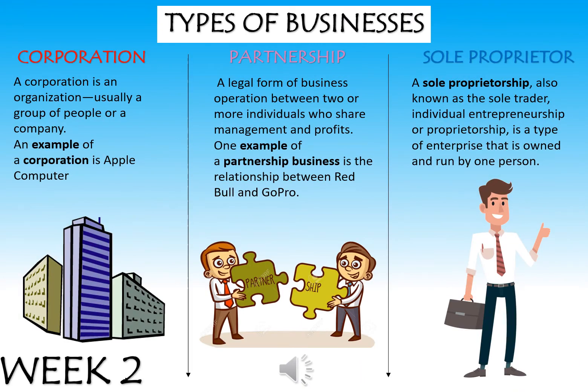Let's look at types of businesses. There are three: a corporation, a partnership, and a sole proprietor. A corporation, shown on the left in red, is an organization, usually a group of people or a company. An example is Apple Computer — the brand that makes iPhones is a massive corporation where phones get made. Google is also a corporation — when you search on Google to get to YouTube, that's a corporation too.